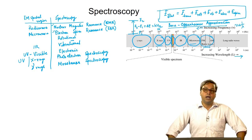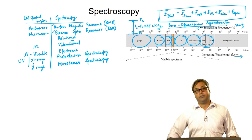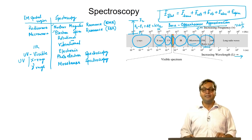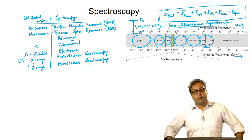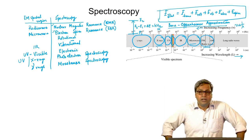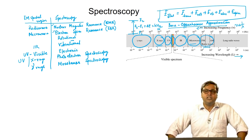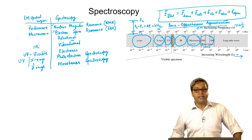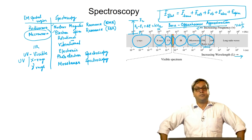Depending on the delta E value, the nuclear spin system absorbs in the radio frequency region, giving the name Nuclear Magnetic Resonance (NMR). Similarly, delta E for the electron spin system matches the energy of the microwave region, so ESR takes place in the microwave region of the electromagnetic spectrum.